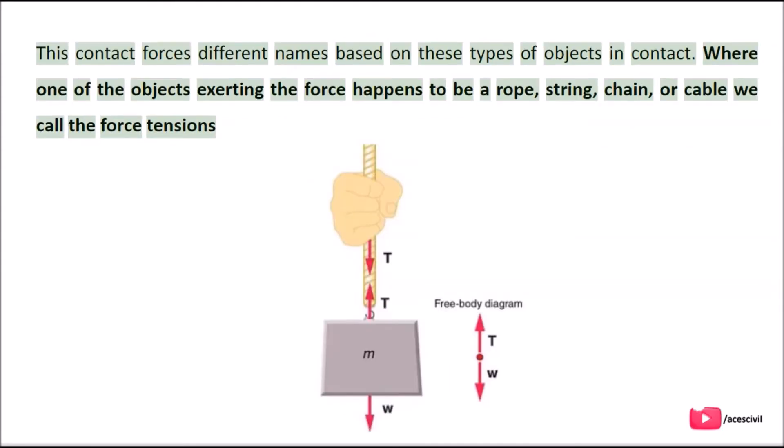This contact force has different names based on the types of objects in contact. Where one of the objects exerting the force happens to be a rope, string, chain, or cable, we call the force tension.